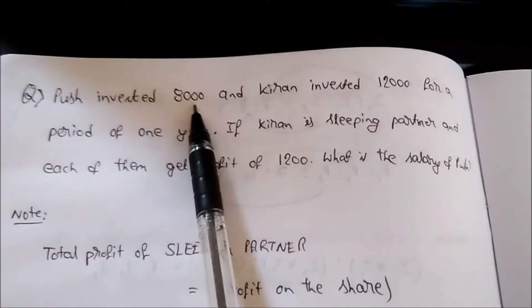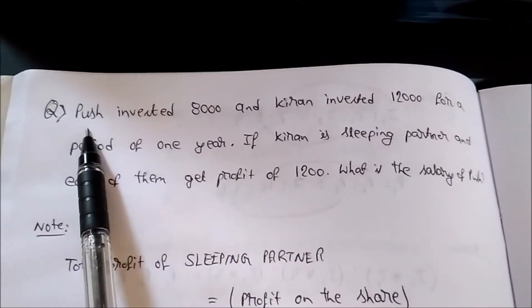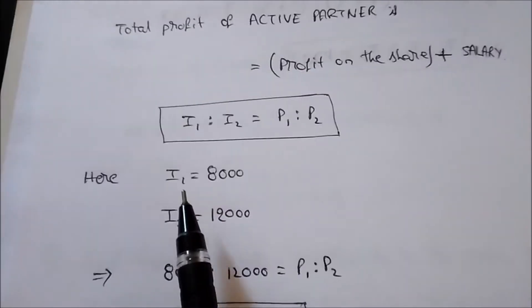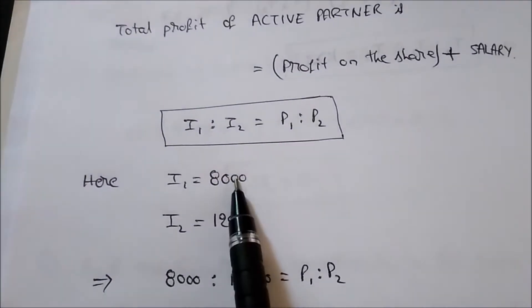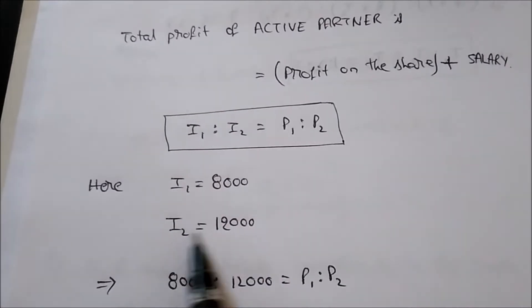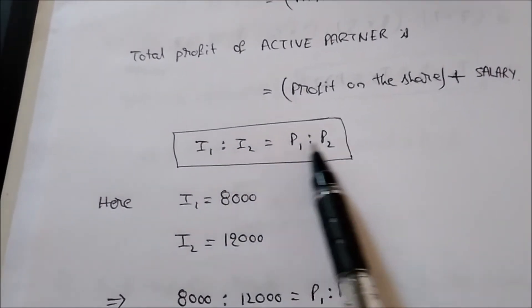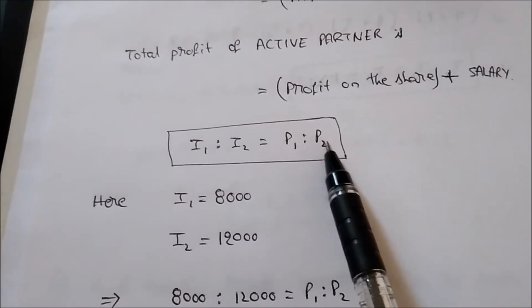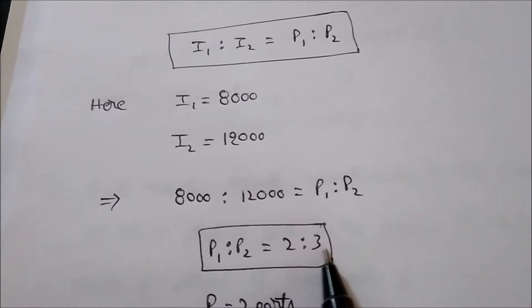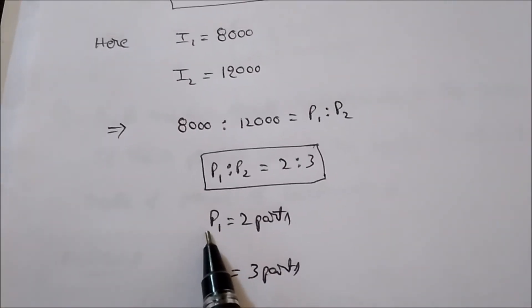Push invested 8,000 and Kiran invested 12,000. Let us consider Push as the first person and Kiran as the second person. So i1 is 8,000 and i2 is 12,000. Substituting in the formula i1:i2 = p1:p2, we get p1:p2 = 2:3.